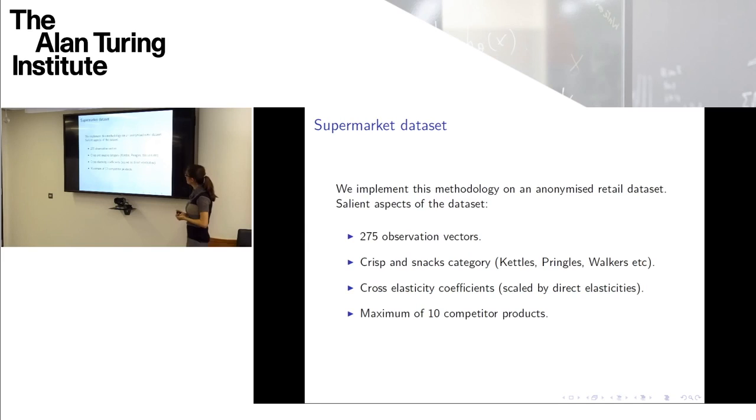So we implemented this methodology on an anonymized retail dataset. The main aspects of the dataset were we had 275 observation vectors for so 275 products. This was the crisps and snacks category. So, kettle crisps, walkers, popcorn, nuts, James, anything else? Junk food. And we had a maximum of 10 competitor products per observation. And these observations were cross-elasticity coefficients scaled by the direct elasticities. So that the cross-elasticity is always as a multiple of direct elasticities.